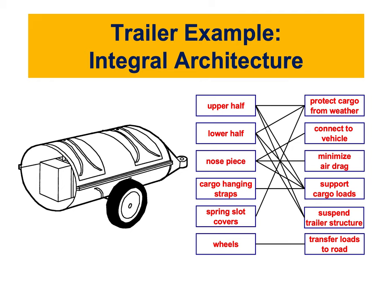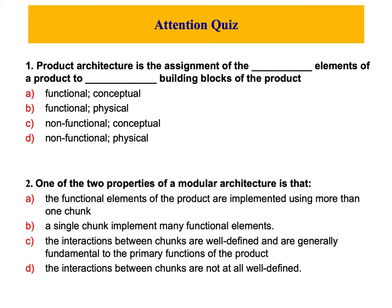I hope this clarifies the idea of modular and integral architectures. You need to decide which one to use — I recommend modular because it makes the design and any modifications simpler. Before we end, think about these two attention quiz questions. The first: product architecture is the assignment of functional elements of a product to physical building blocks — the answer is B.